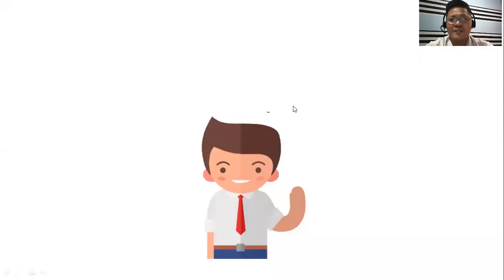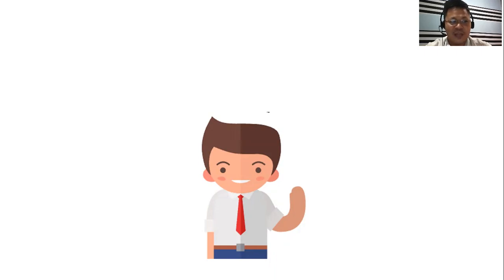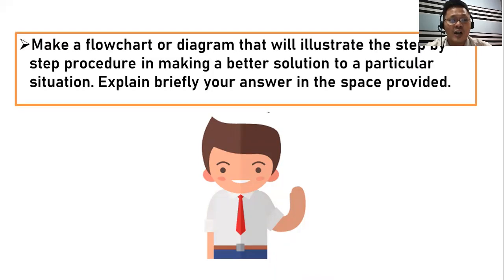I think you have already done your first activity. Now, based on that activity, what are the steps or procedures you followed in order to come up with a better solution to each situation? Make a flowchart or diagram that will illustrate the step-by-step procedure in making a better solution to a particular situation. Explain briefly your answer in the space provided in your answer sheet.